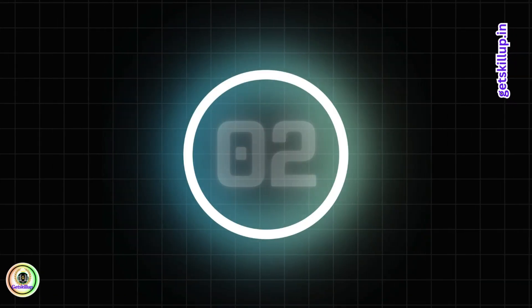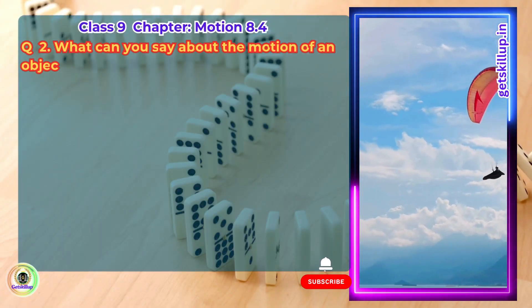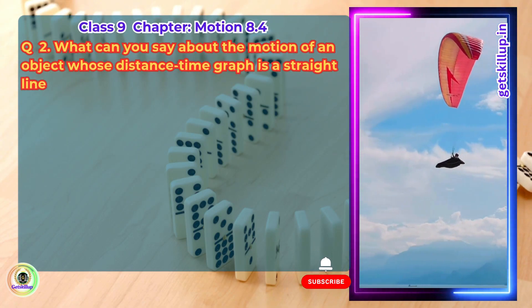Question 2. What can you say about the motion of an object whose distance-time graph is a straight line parallel to the time axis?